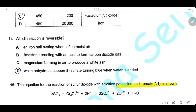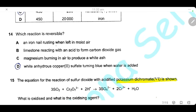Question 14. Which reaction is reversible? Iron rusting in moist air is not reversible. Limestone reacting with acid to form CO2 is not reversible. Magnesium burning in air is not reversible. White anhydrous copper sulfate turning blue when water is added to form hydrated copper sulfate is reversible — by heating, water evaporates and it returns to white anhydrous copper sulfate. The answer is D.